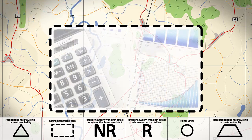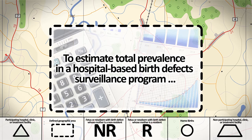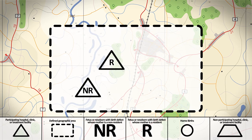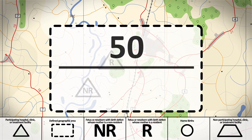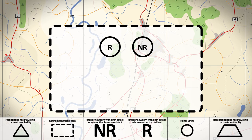Despite these considerations, to estimate total prevalence in a hospital-based birth defect surveillance program, first count the number of live births, stillbirths, and elective terminations of pregnancy for fetal anomaly with birth defects occurring in participating hospitals within a given period of time. This is the numerator. Note that stillbirths, elective terminations of pregnancy for fetal anomaly, or neonates with birth defects who are delivered at home are never included in hospital-based surveillance, even if they are identified and captured later by a participating hospital.